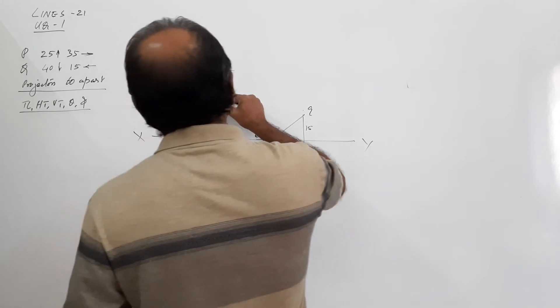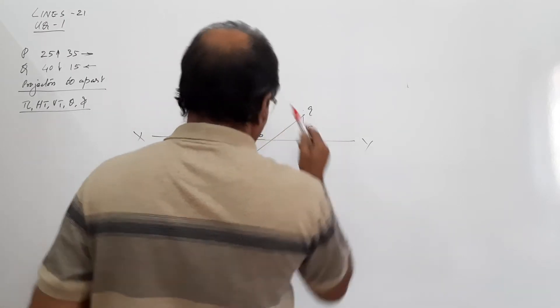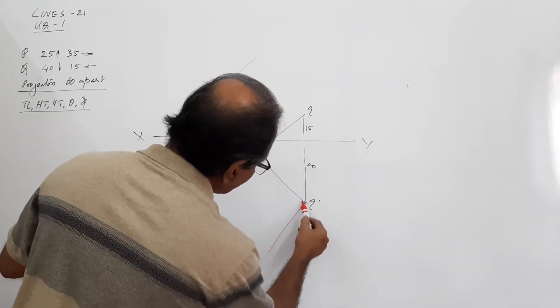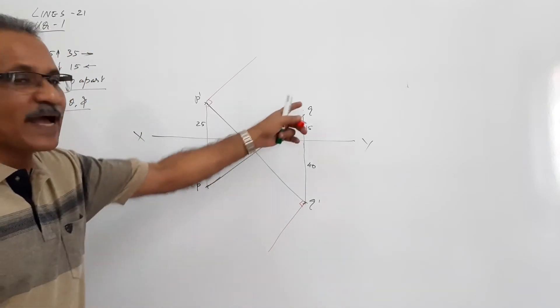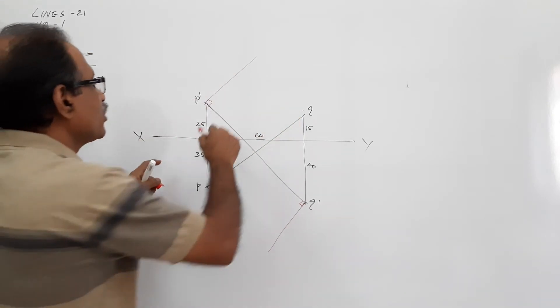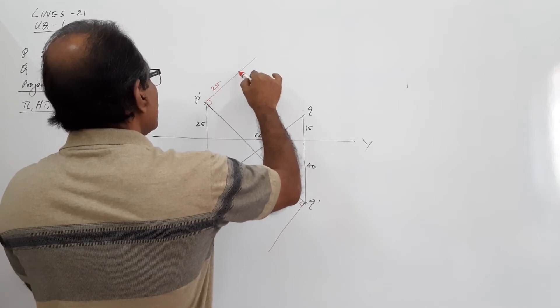While drawing them, you look for the plan. If the plan crosses XY, we draw the perpendicular in opposite direction. At P dash I draw in this direction and at Q dash I draw in this direction. The reason is the plan PQ is closing XY. On this perpendicular you mark 25 and you get capital P1.